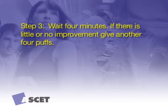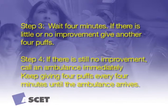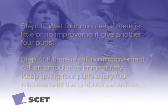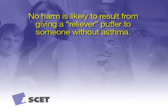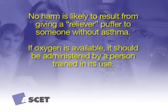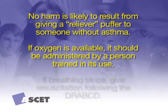Step 3: Wait four minutes. If there is little or no improvement, give another four puffs. Step 4: If there is still no improvement, call an ambulance immediately — dial 000 — giving four puffs every four minutes until the ambulance arrives. No harm is likely to result from giving a reliever puffer to someone without asthma. If oxygen is available, it should be administered at a flow rate of at least 8 litres per minute through a face mask by a person trained in its use. If breathing stops, give resuscitation following the ABCD protocol.